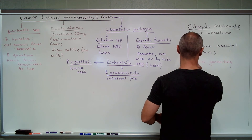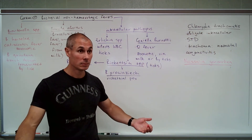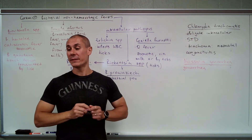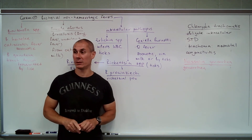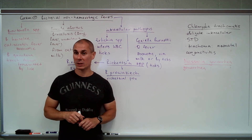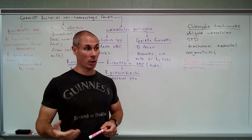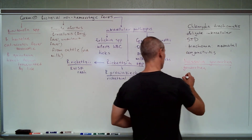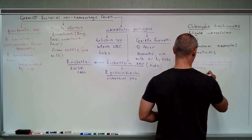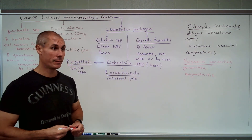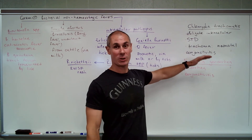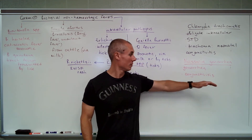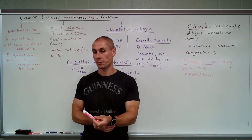Another STD is Neisseria gonorrhoeae, which causes gonorrhea. Interestingly, Neisseria is a fastidious microorganism, meaning it can only be grown in enriched media containing iron, such as blood agar or chocolate agar. Again, in newborns it can lead to conjunctivitis — closely matching chlamydia in that regard.